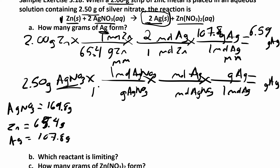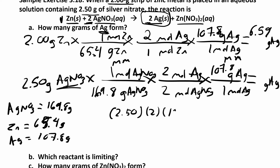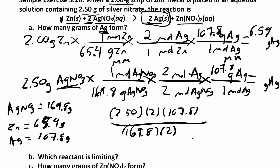For the silver nitrate pathway: start with 2.5 grams of AgNO₃, divide by 169.8 g/mol to get moles, then use the molar ratio — two moles of AgNO₃ produce two moles of silver (2-to-2, so the ratio is 1:1) — then multiply by 107.8 g/mol to get grams of silver. Working it out: (2.5 × 2 × 107.8) ÷ (169.8 × 2) = 1.59 grams of silver.